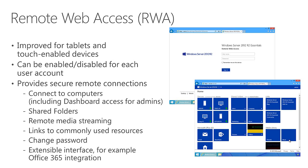One very nice feature of remote web access is the ability to change your password from a remote location. If you're not connected to the computer and don't have a VPN connection, you can use remote web access to log in and change your password. Like the Launchpad, the remote web access interface is extensible by third parties. We extend it if you integrate with the Office 365 subscription — you'll see that in the remote web access portal as well. Basically we have a very easy-to-use web page that users can log into when out of the office to interact with their server.